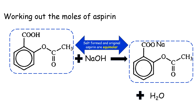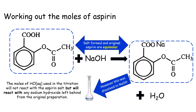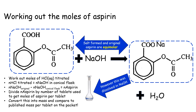The salt formed and the original aspirin are equimolar. The moles of HCl from the titration will not react with the aspirin salt but will react with any sodium hydroxide left behind. So the moles of HCl titrated equal the moles of sodium hydroxide remaining in the conical flask. Original moles of sodium hydroxide minus moles remaining equals moles of aspirin. Divide by the number of tablets to get moles per tablet, convert to mass, and compare to the published mass on the packet. This is how quality checking is done — random titrations confirm the amount of aspirin in tablets matches the stated dose.